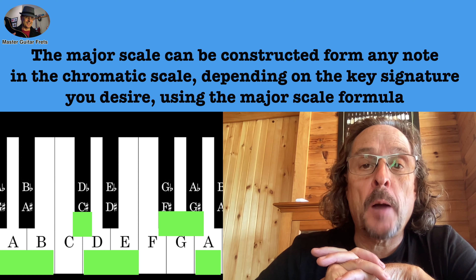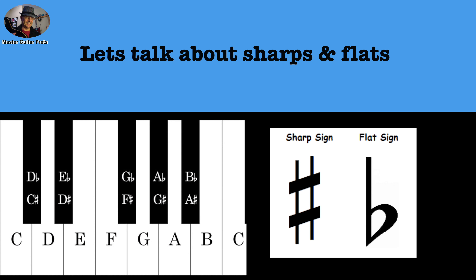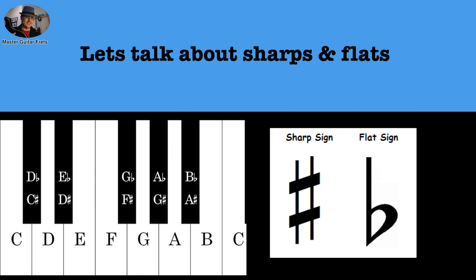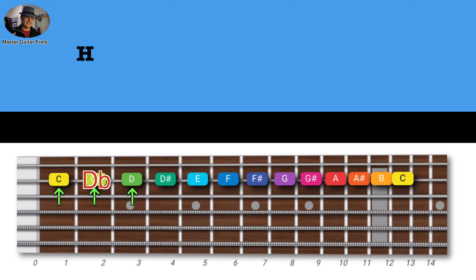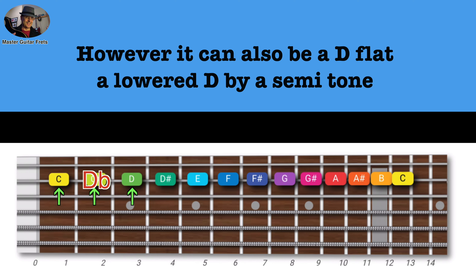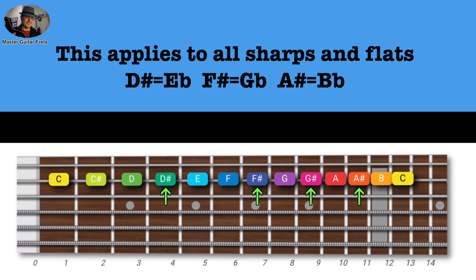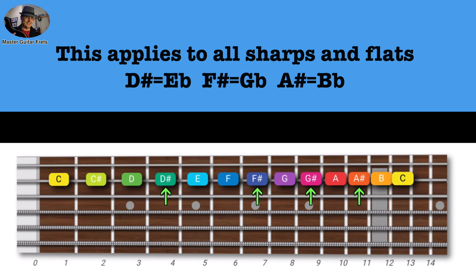Let's circle back to sharps and flats. After C comes C sharp — it's also known as a raised C by a semitone. However, it can also be a D flat, a lower D by a semitone. This applies to all sharps and flats. Just try to remember that and don't lose any sleep over it.